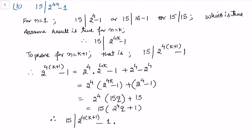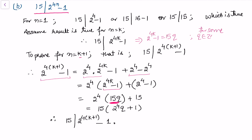For part b, we show 15 divides 2^(4n) − 1 by induction. The steps are analogous: base case n=1, assume 2^(4k)−1 = 15q for n=k, then for n=k+1 we split the term, replace 2^(4k)−1 with 15q, and show the result is a multiple of 15.